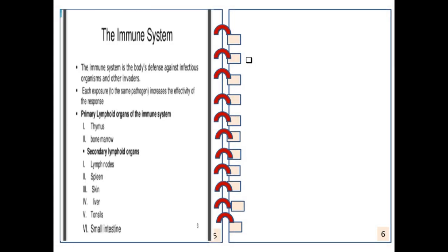The immune system acts against infectious organisms and invaders, and each exposure to a pathogen increases the efficacy of the response. There are primary lymphoid organs, which are thymus and bone marrow, and secondary lymphoid organs, which are lymph nodes, spleen, skin, liver, tonsils, and small intestine.